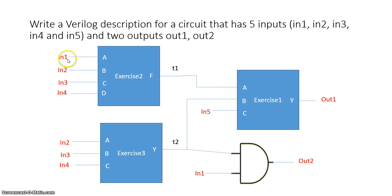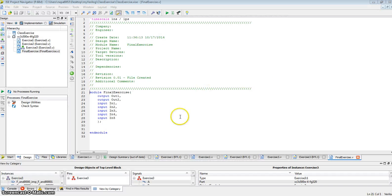Exercise two has inputs in1, in2, in3, in4, and an output called t1. So let's describe a wire called t1, because it's an internal signal.